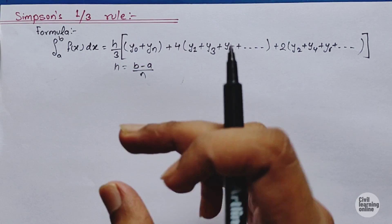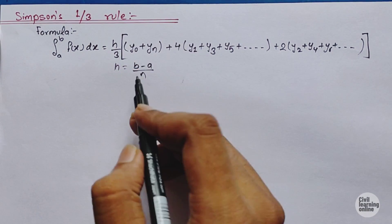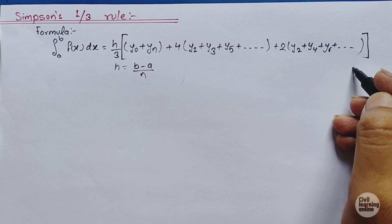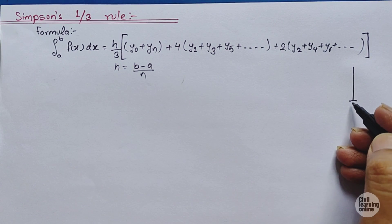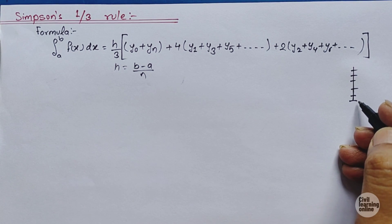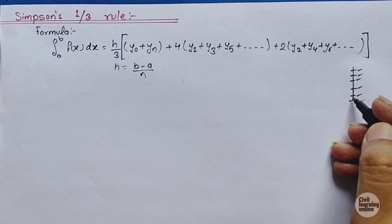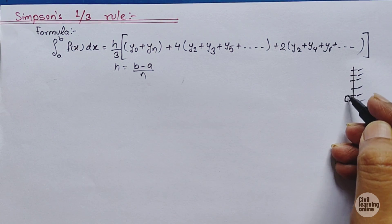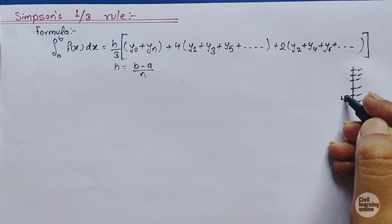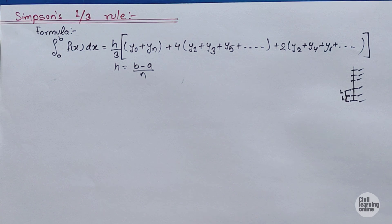h is the distance between consecutive interval nodes. Suppose we have a line divided into n intervals: node 1, 2, 3, 4, 5, 6, and so on. The distance from x-naught to x1 is h, similarly from x1 to x2 is h. So h is just the spacing between nodes and n is the number of intervals. Now let us solve an example using Simpson's 1/3 rule.